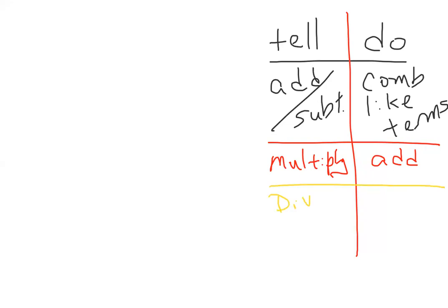If I tell them to divide, one step less of division is subtraction. So four x to the fifth divided by two x to the third.